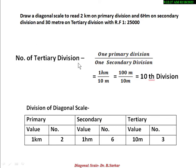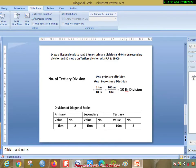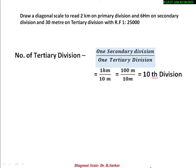Now for the number of tertiary divisions. The formula is: 1 secondary division divided by 1 tertiary division. One secondary division was 1 hectometer and 1 tertiary division was 10 meter. The units are different, so we convert: 1 hectometer equals 100 meter. Dividing 100 meter by 10 meter equals 10, so the number of tertiary divisions is 10.